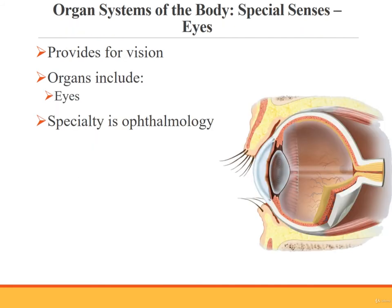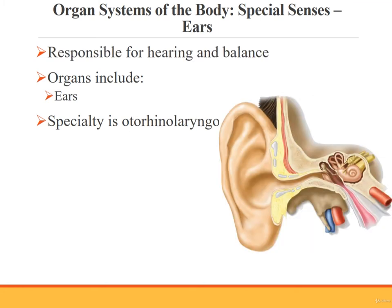We will also incorporate the special senses provided by the eyes and ears into our study of organ systems. The special sense of sight involves the eyes as the primary organs, which are responsible for vision. Ophthalmologists care for the eye. The other special sense of hearing involves the ears as the primary organs. The ears are responsible for both hearing and balance. Otorhinolaryngologists care for the ear.